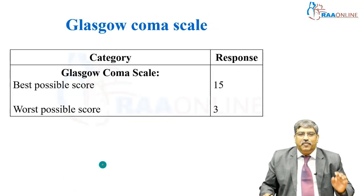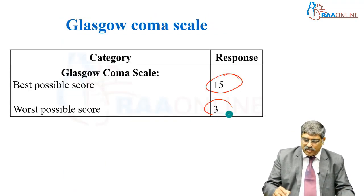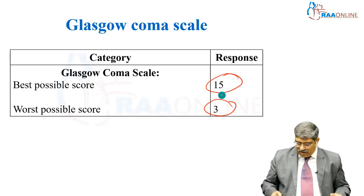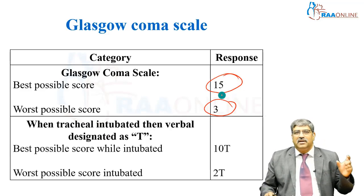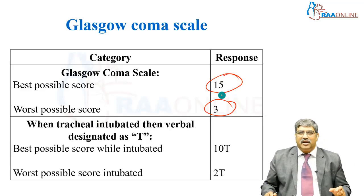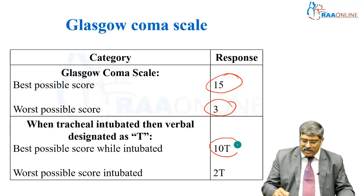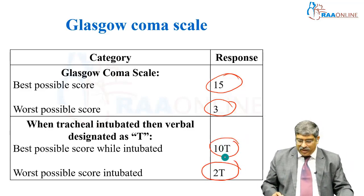The best possible score is 15 and the worst possible score is 3. If the patient is intubated, 'T' is added to the scoring — the best possible score when intubated is 10T and the worst possible score is 2T.